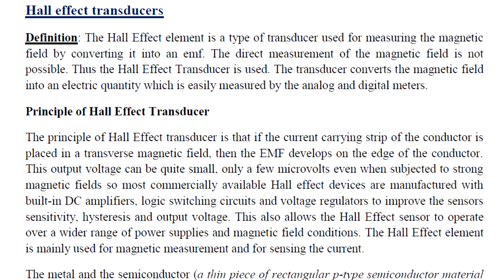The Hall Effect transducer is a type of transducer used for measuring the magnetic field by converting it into an EMF. The direct measurement of the magnetic field is not possible, thus the Hall Effect transducer is used. The transducer converts the magnetic field into an electric quantity which is easily measured by analog and digital meters.